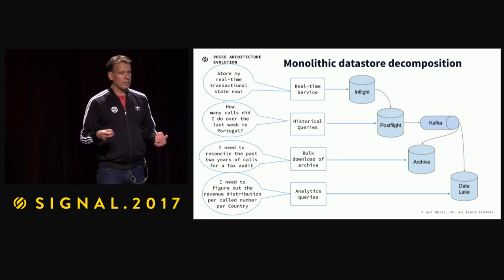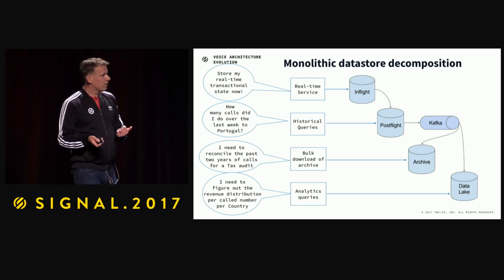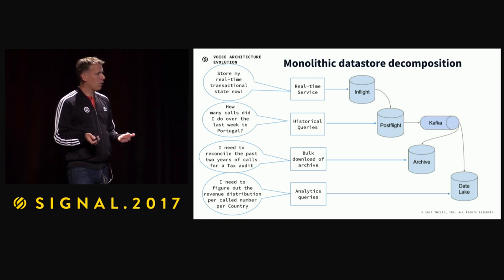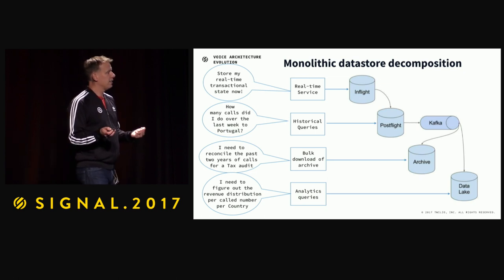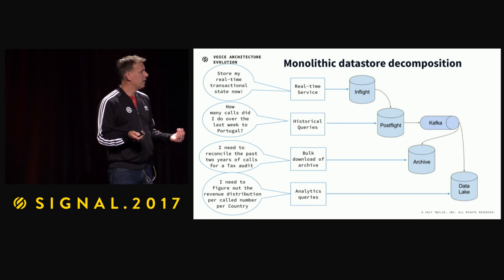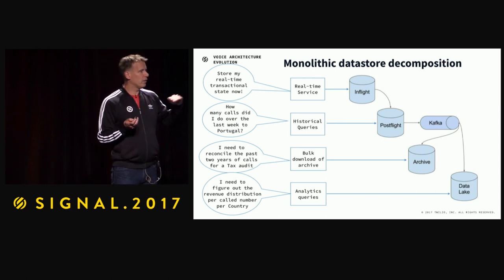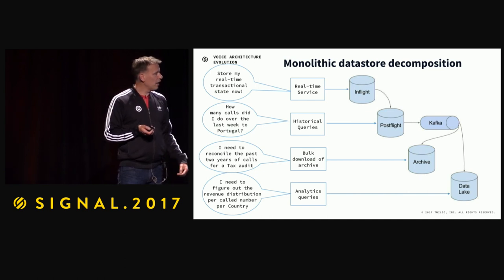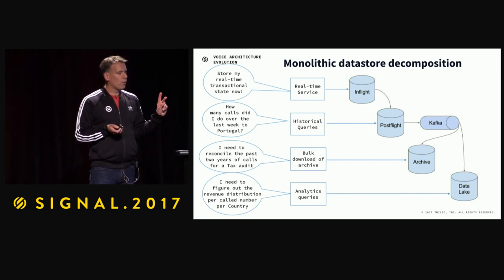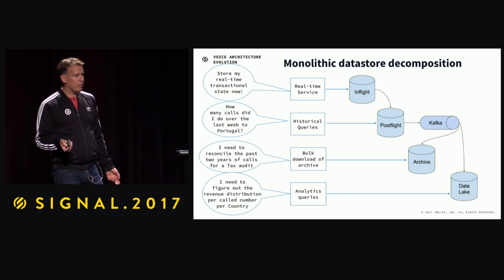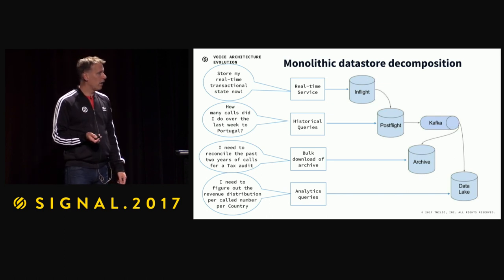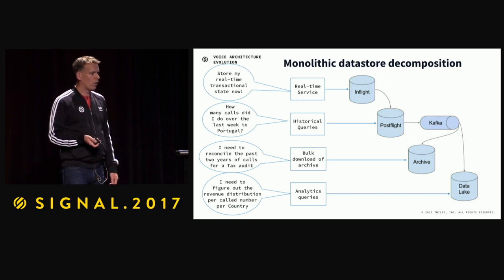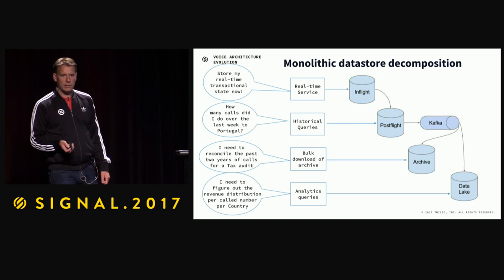These different concerns have different scaling requirements. This is an example of where it's very important to understand the data access pattern and separate concerns based on that pattern. What we've found is that if you try to support more than one of these use cases in the same data store, you're likely to have a problem or a very ugly compromise somewhere.